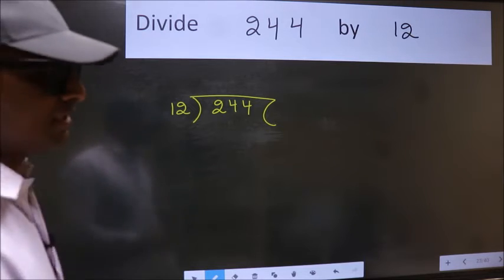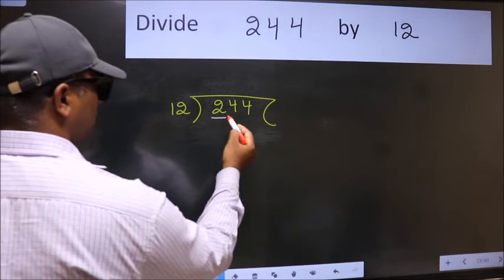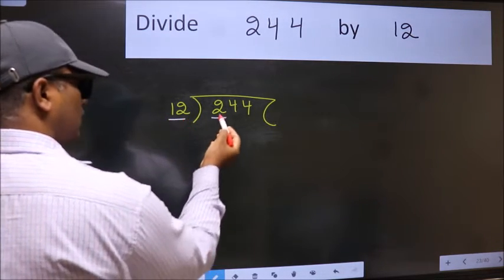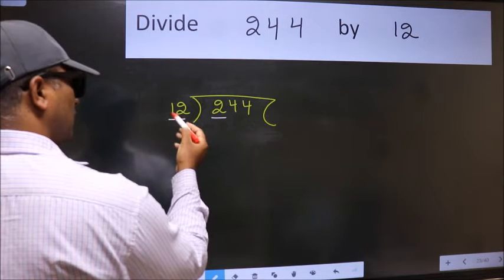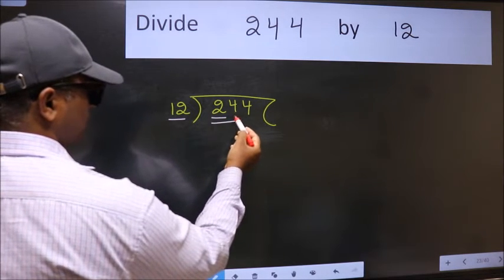Next. Here we have 2 and here 12. 2 is smaller than 12. So take 2 numbers, 24.